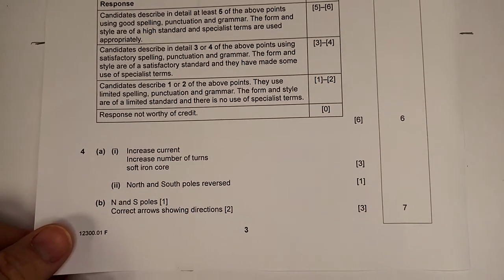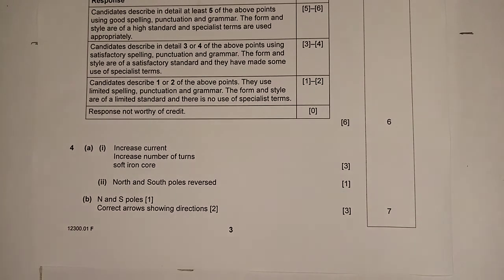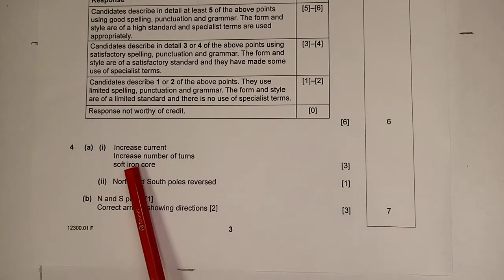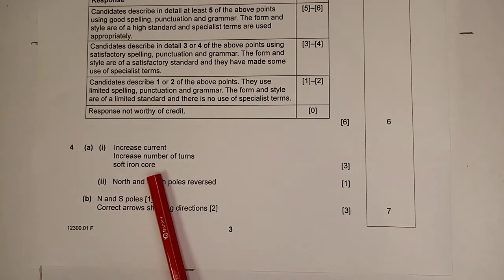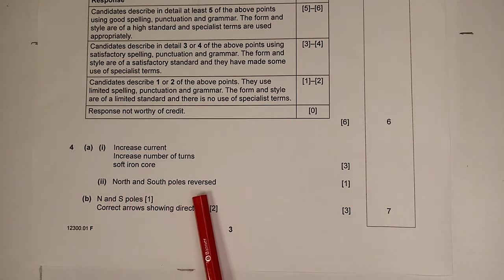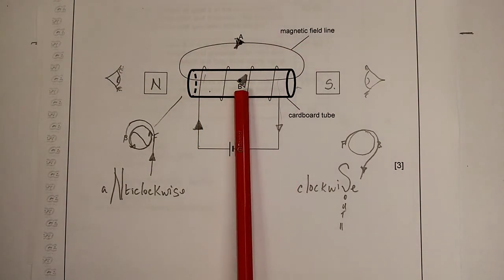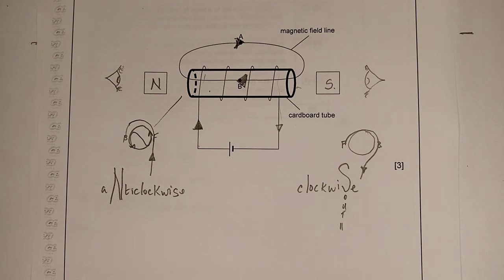That's grand. Now let's go to the next one. This is a nasty question, rarely asked. Increase current, increase the number of turns per unit length would be a better answer, and a soft iron core. Don't put any other metal in because they're not magnetic. Don't say a copper core. It has to be a soft iron core. If you put in a steel core, you make it a permanent magnet, and then when you turn the current off, the stuff still sticks to it. North and south poles are reversed. North and south poles labeled properly, correct arrows showing them. From north to south, except inside a solenoid where it points from south to north. That's questions three and four done. Thanks for listening, I'll be back shortly.